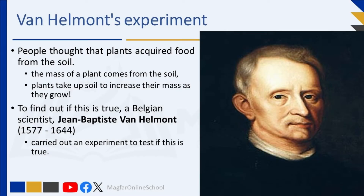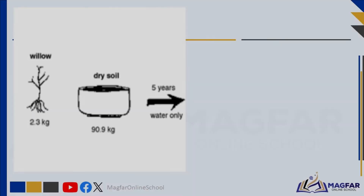Looking into the past, people did not always know about the process of photosynthesis. People thought that plants acquired food from the soil and that the mass of a plant comes from the soil — that plants take up soil to increase their mass as they grow. It took the work of scientists for us to discover that photosynthesis was occurring right under our noses. To find out if plants really increased their mass from soil, a Belgian scientist, Jan Baptiste van Helmont, carried out an experiment over five years to test this, beginning in 1634.